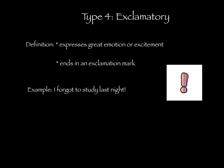What's an exclamatory sentence? Alright, Mr. Geiselman, I'll answer one last question. An exclamatory sentence expresses a great emotion or excitement. It ends in an exclamation mark. The example is: I forgot to study last night — and if you did, you'd definitely exclaim it. Please remember to stop your video so you can record the definition and write your own example for this sentence.